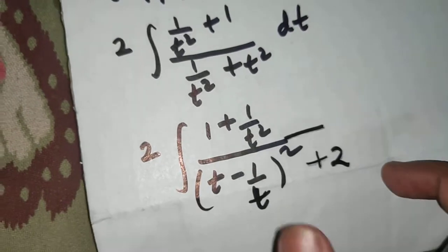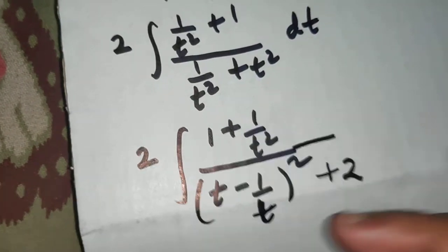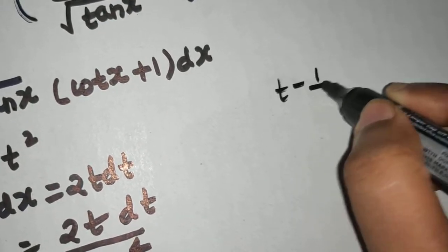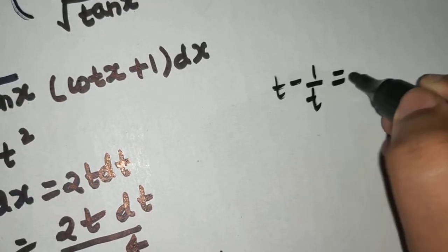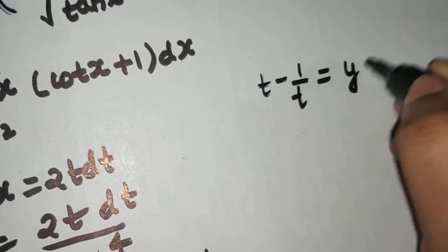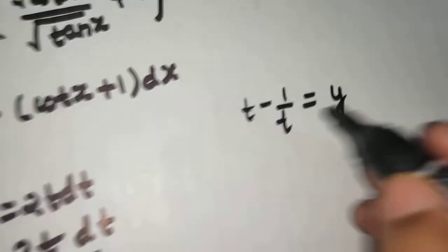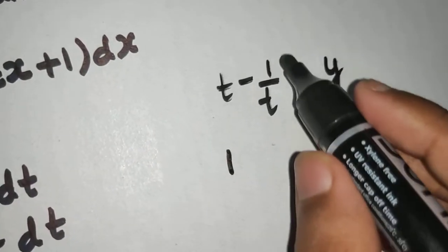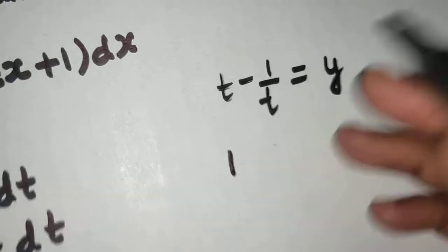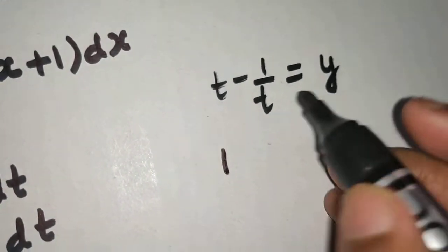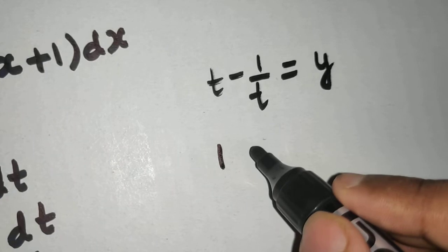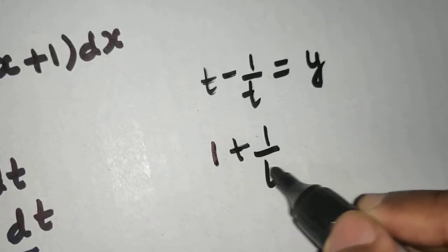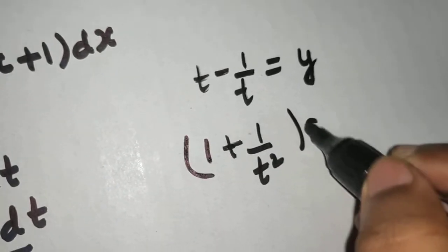Now, if I take (t − 1/t) as another variable y, and differentiate: derivative of t is 1, derivative of −1/t is +1/t², so (1 + 1/t²) dt = dy.